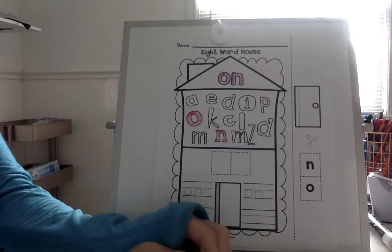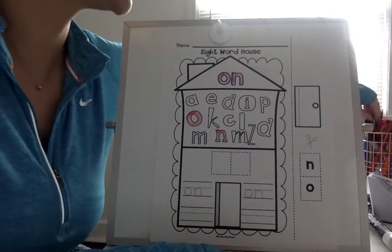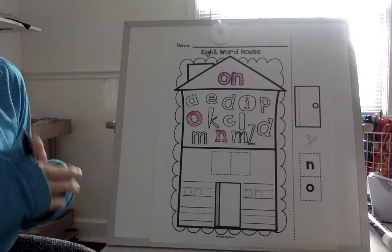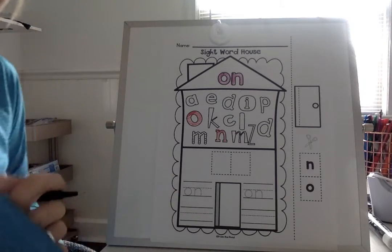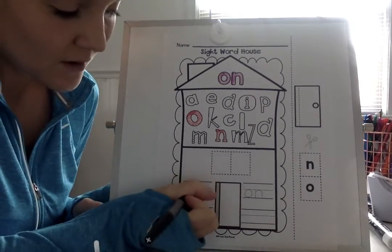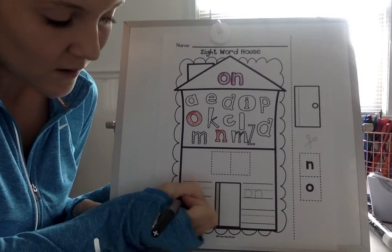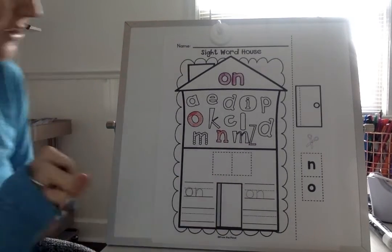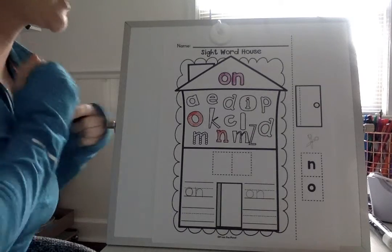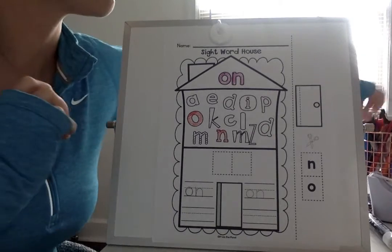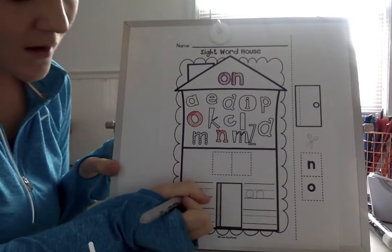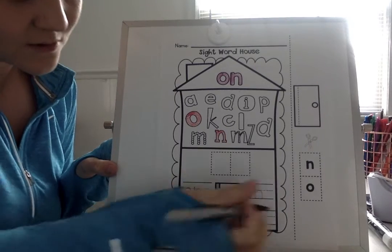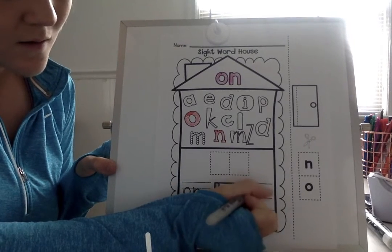Now I'm going to grab my pencil — I'm going to use a marker so you can see it better. So now we're going to trace, we're going to practice tracing the word on. So I'm going to do O-N. Actually, I'm going to grab a different marker so you guys can see better. Here we go. That's better. O-N. I'm going to do it again. O-N.